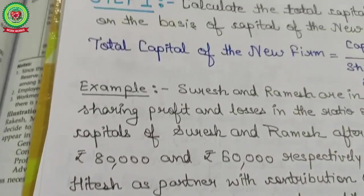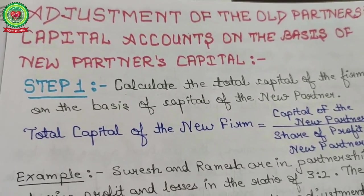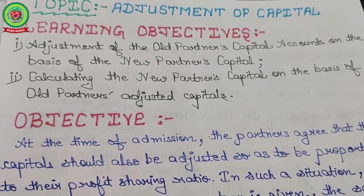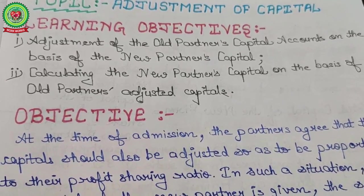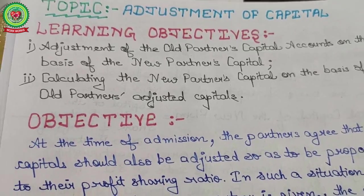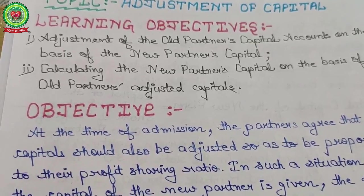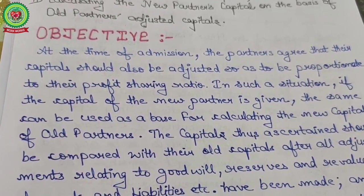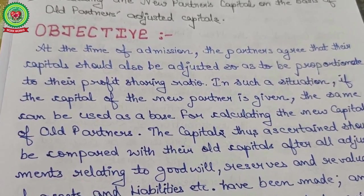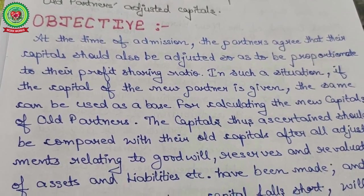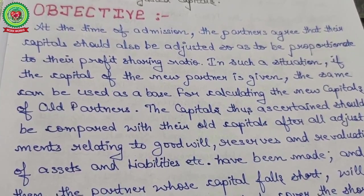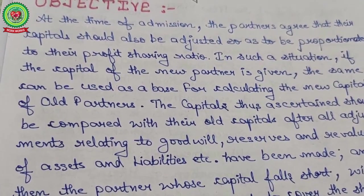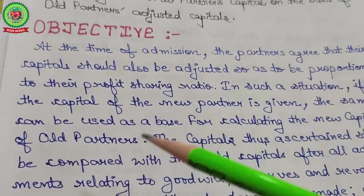Now our today's topic is adjustment of capital of old partners. The learning objectives are: first, adjustment of old partners' capital accounts on the basis of the new partner's capital; second, calculating the new partner's capital on the basis of old partners' adjusted capital. At the time of admission, partners agree that capital should be adjusted so as to be proportionate to their profit sharing ratio. If the capital of the new partner is given, it can be used as a base for calculating the new capital of all partners.